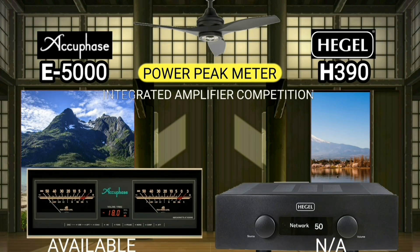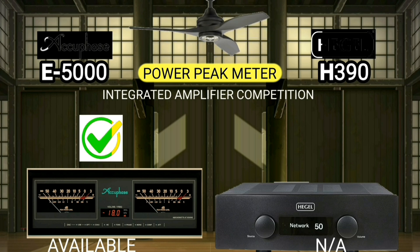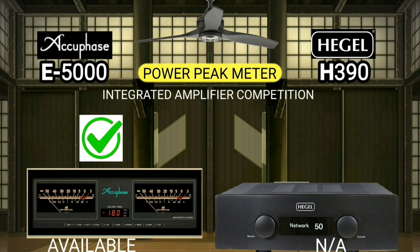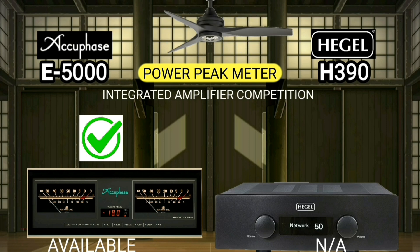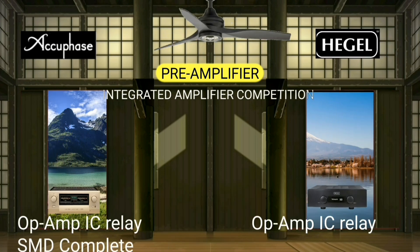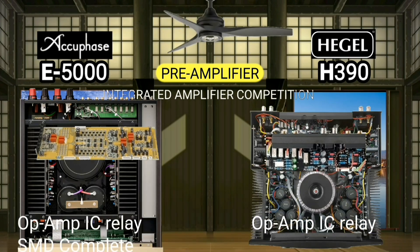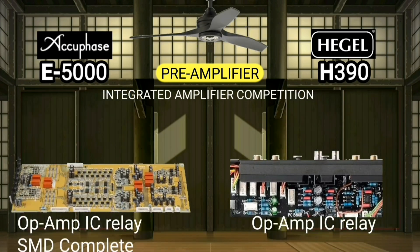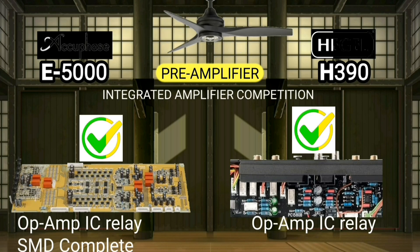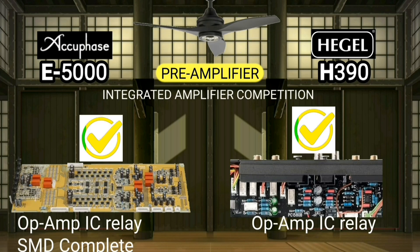A power peak meter is a device that an amplifier should have, which is useful for knowing the output level. These two integrated amplifiers have almost the same pre-amplifier design, not quite identical, but their function is the same.